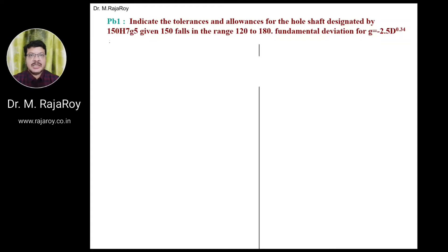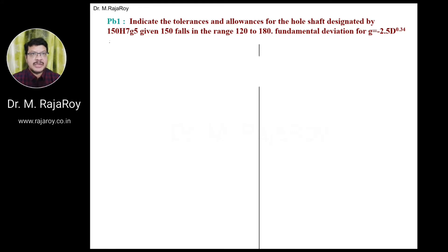Dear students and friends, in this video I am going to solve a limit, speeds and tolerances problem. The problem is given like this: Indicate the tolerances and allowances for the whole shaft system designated by 150 S7 G5.